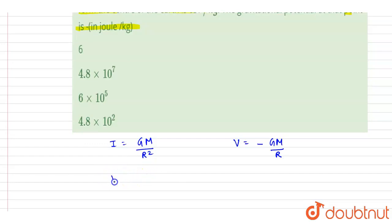So intensity is given, it is 6 Newton per kg, and the R is also given, it is 8000 kilometers.